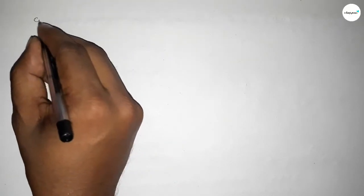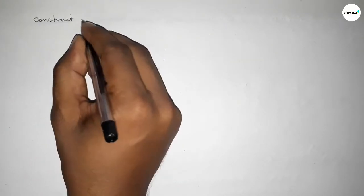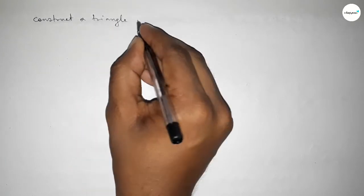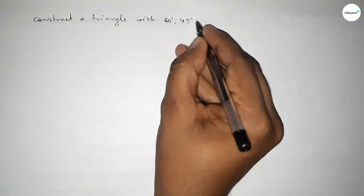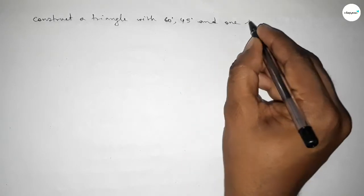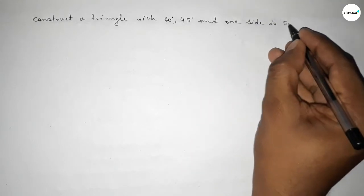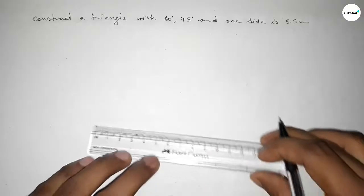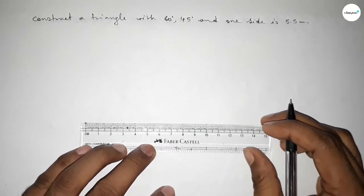Hi everyone, welcome to SSR Classes. Today in this video we have to construct a triangle with two given angles — 60 degrees and 45 degrees — and one given side of 5.5 centimeters. So let's start the video.